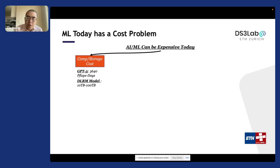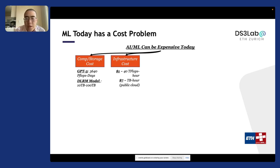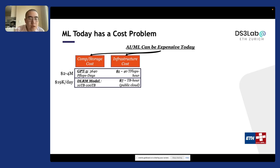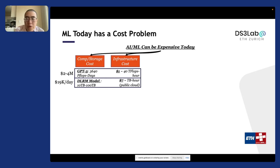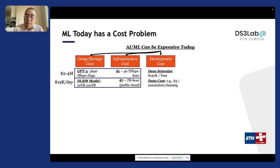They simply need a lot of compute and storage, and the cost of ownership for infrastructure is not cheap. Combining these two together, it's not uncommon to spend a couple million dollars to train big language models and tens of thousands of dollars just to hold large recommendation models in memory. But this is just about building a single model, and developing even a single machine learning model is getting more and more expensive.